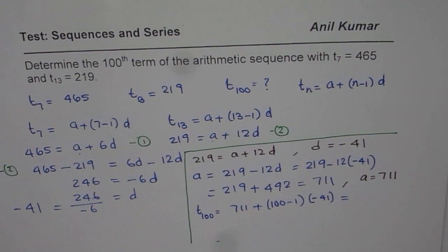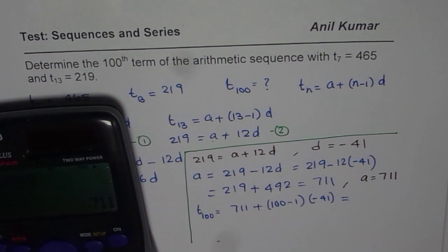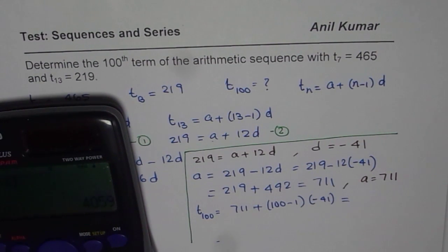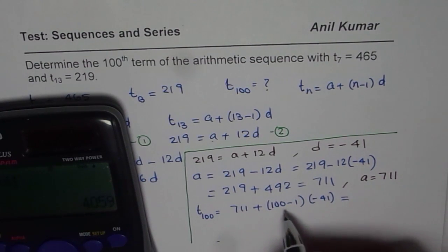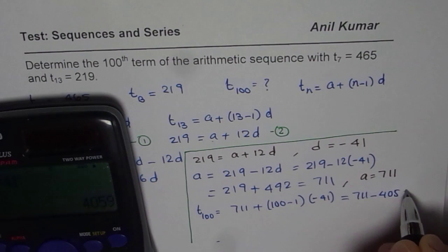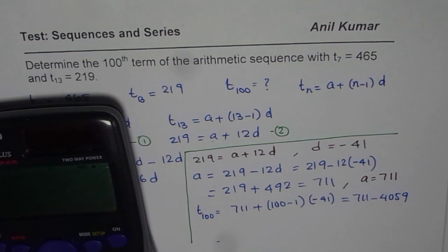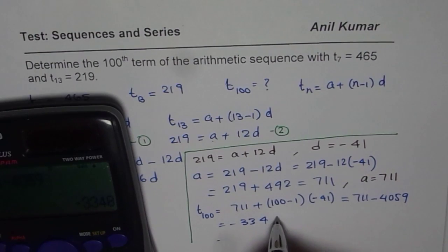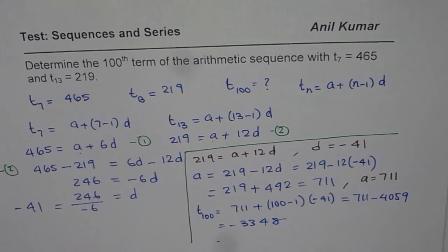So let us substitute these values and find the answer. We will do 100 minus 1 times minus 41. So that is 99 times 41. That gives us 4059, a negative number. 711 minus 4059, correct? So now we will do 711 minus 4059. So we get our answer, which is minus 3348.